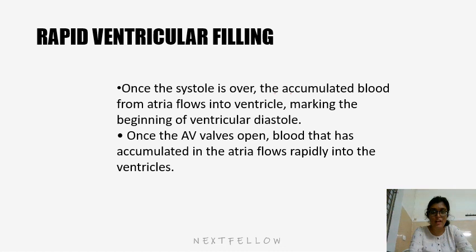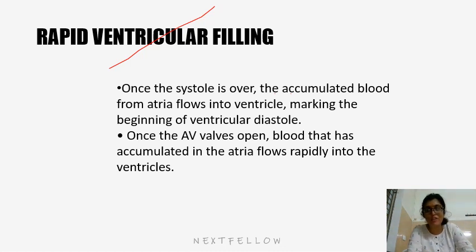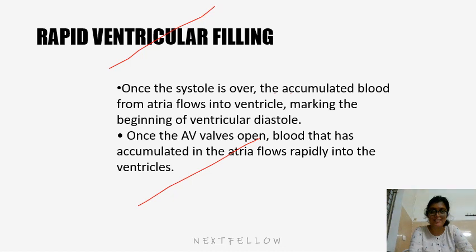In the stage of rapid ventricular filling, once the systole is over, the accumulated blood from the atria flows into the ventricle, marking the start of ventricular diastole. Once the AV valve opens, blood that has accumulated in the atria flows rapidly into the ventricles.